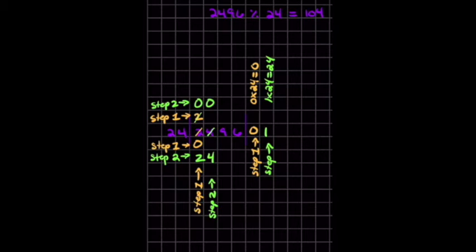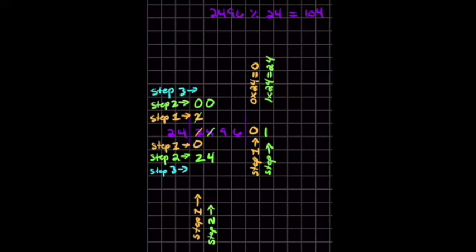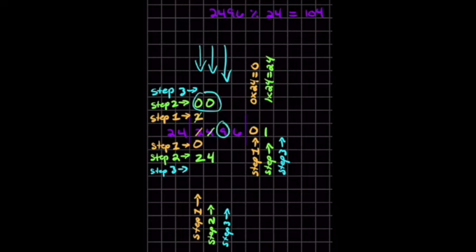Okay, so now I'm ready for step 3. Step 3 will also use this row and this column and this column. So does 24 go into 9? I'm using all of these — 0, 0, 9. Does it go into 0, 0, 9? It doesn't go into 9. So there'll be a 0 here. 0 times 24 equals 0 — I transcribe my 0 under 9. So 9 minus 0 is 9.